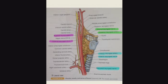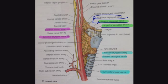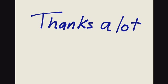This is most obvious in this picture. To summarize: the internal branch of the superior laryngeal nerve moves with the superior laryngeal artery, the external branch of the superior laryngeal nerve moves with the superior thyroid artery, and the recurrent laryngeal nerve moves with the inferior laryngeal artery. That's it for this video — thanks a lot for watching.